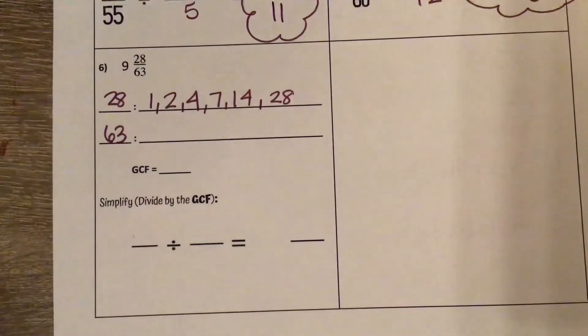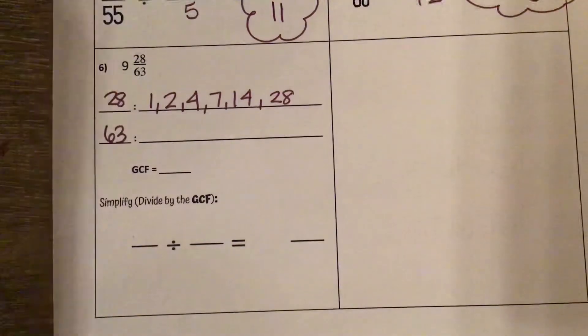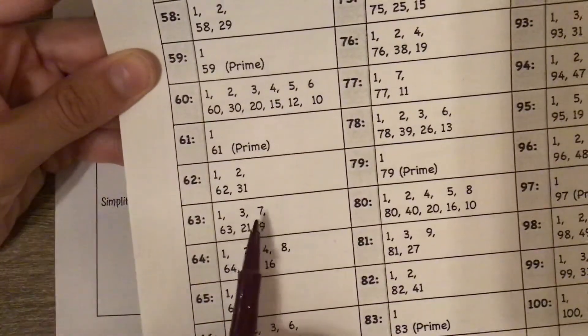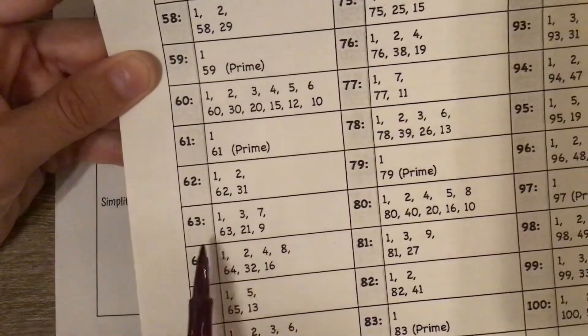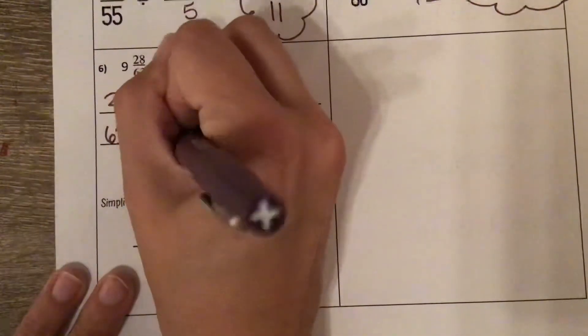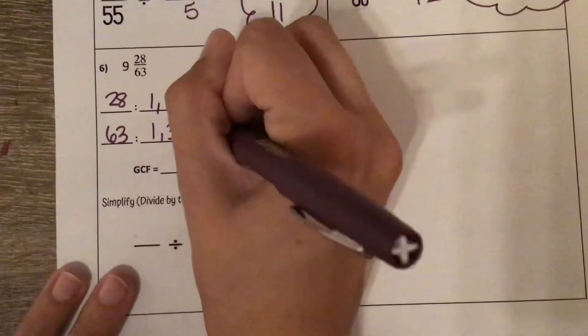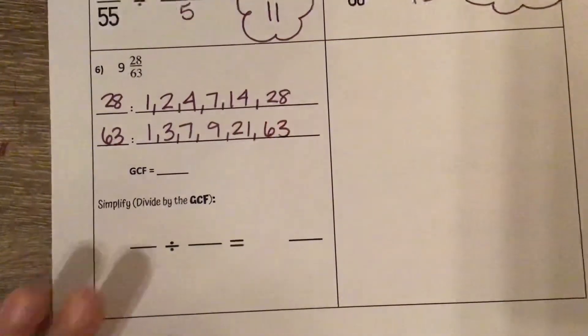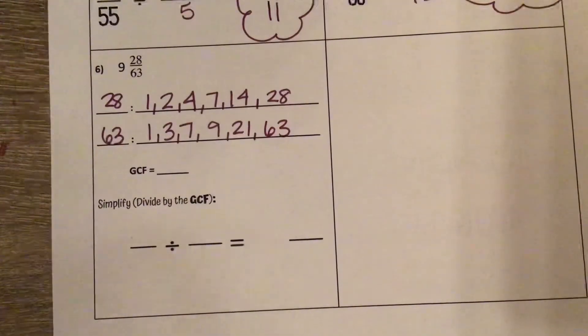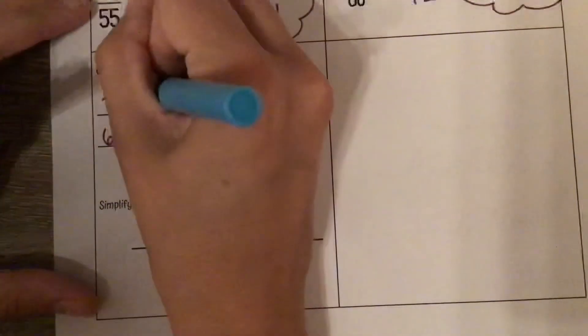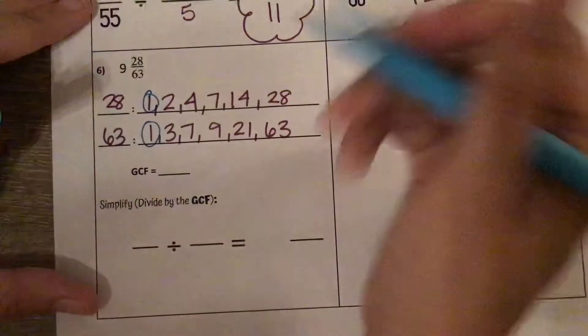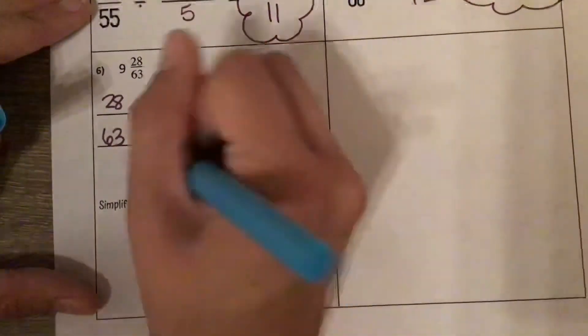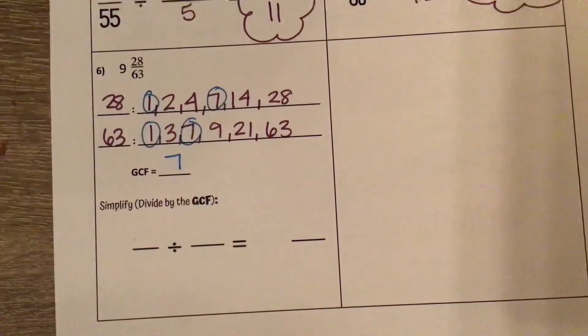Same thing for 63: 1, 3, 7, 9, 21, 63. Now we're going to go through and circle those common factors. They share 1, not 2, not 4, they share 7, not 14, not 28. So their greatest common factor is 7.